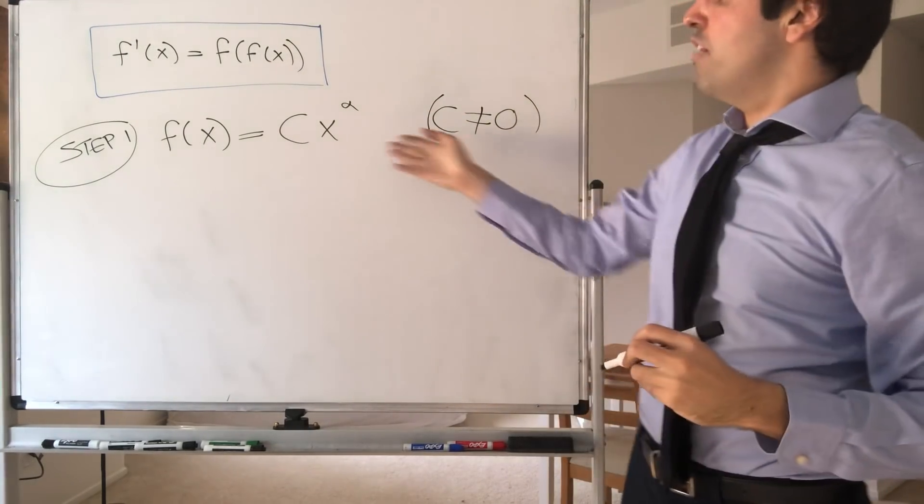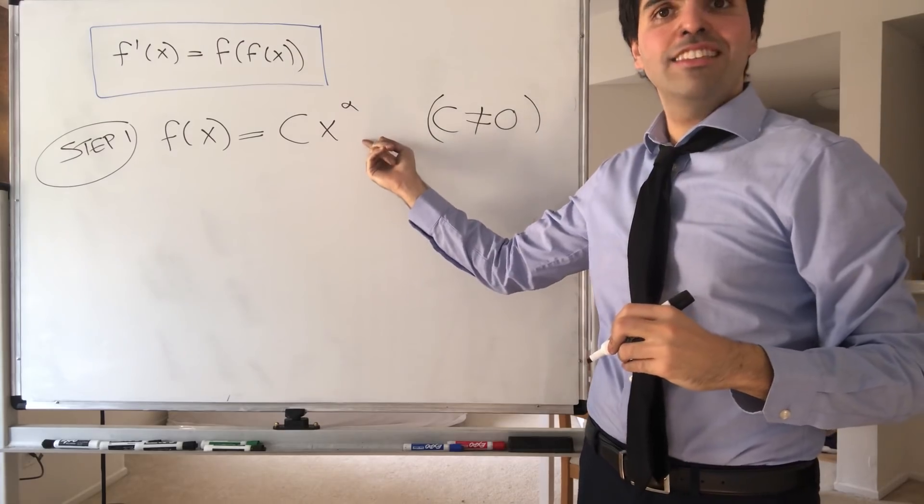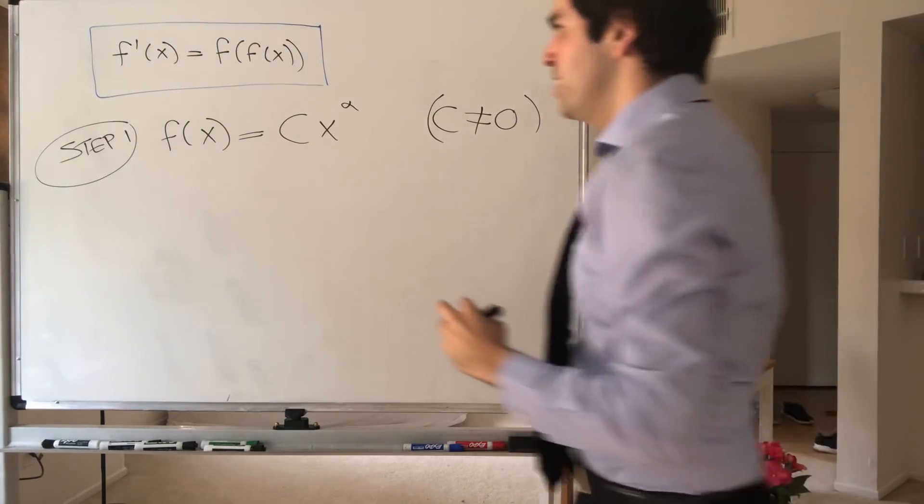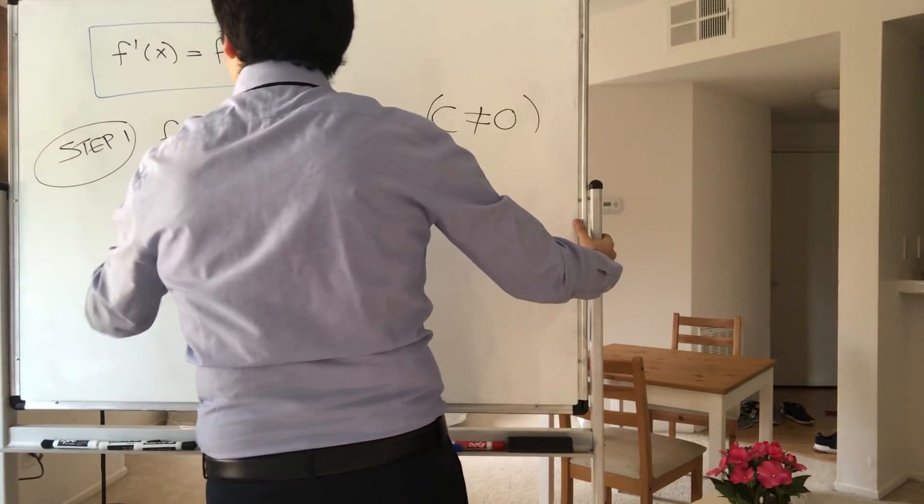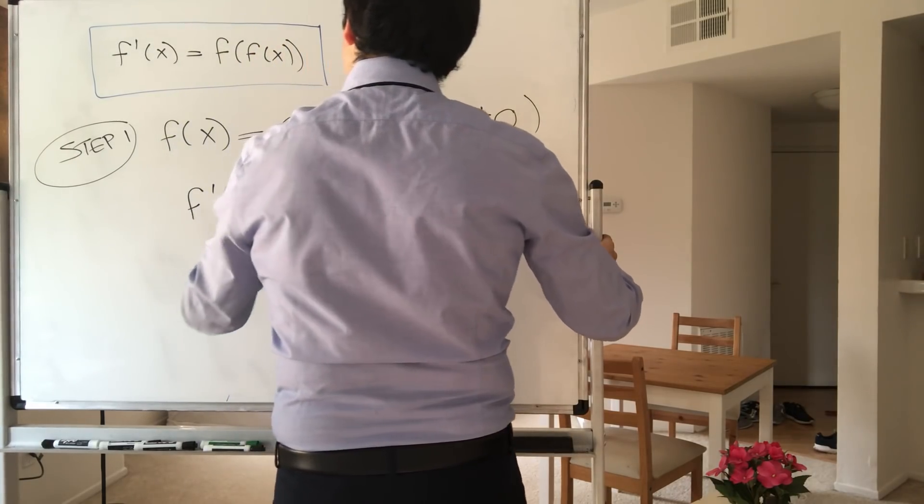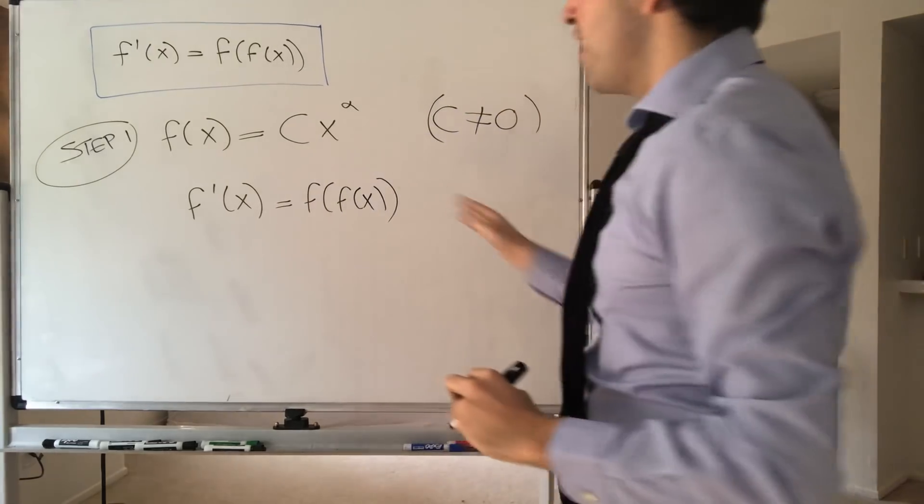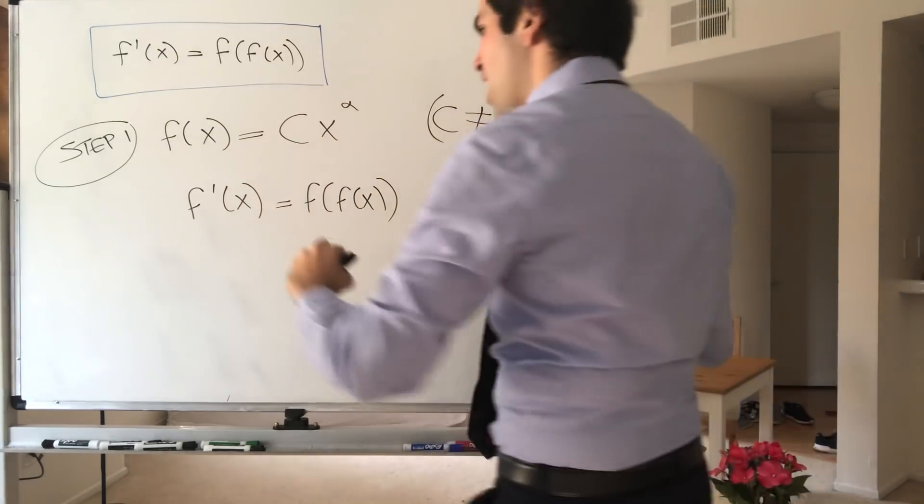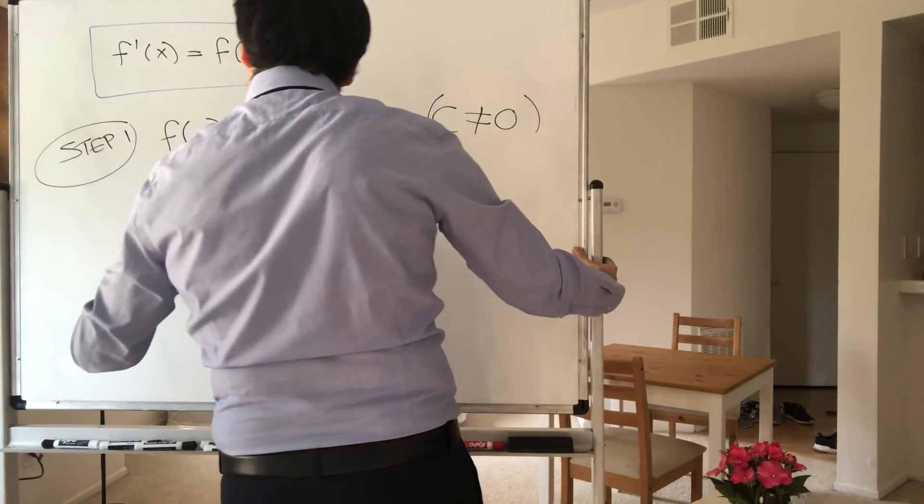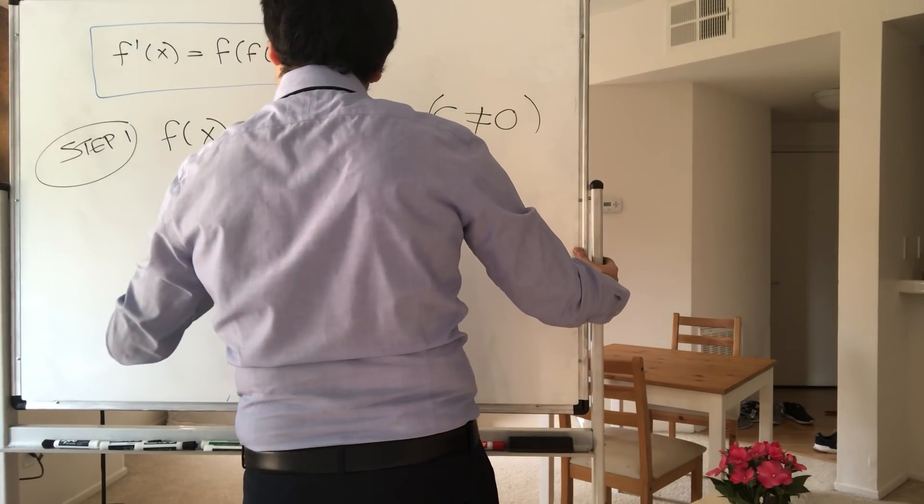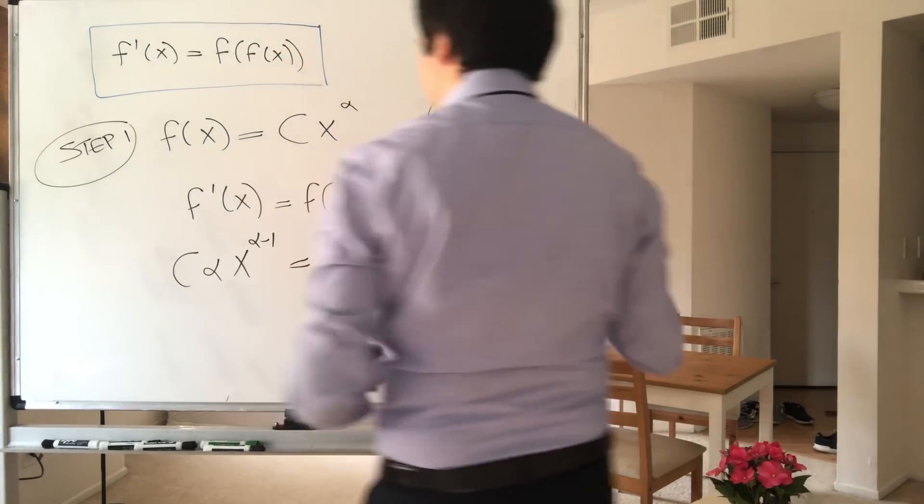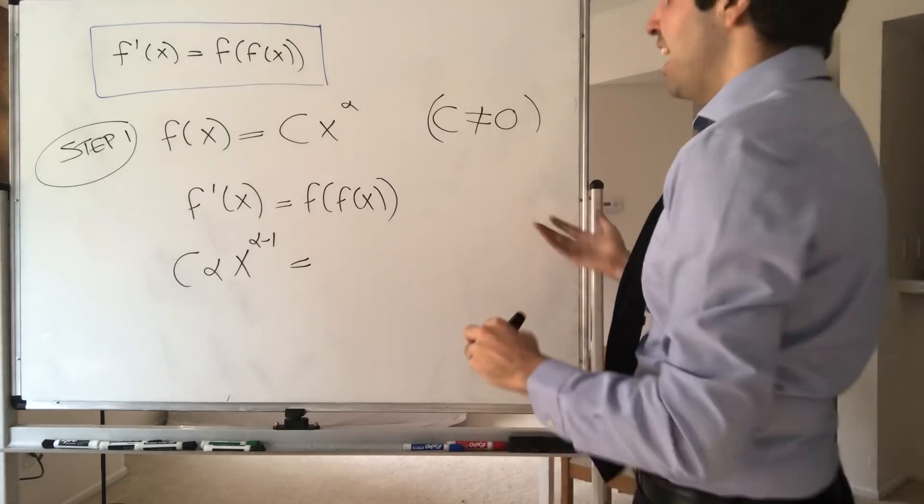And then what we have to do, we have to plug this ansatz into our equation. So, we have f' equals f of f. However, f' is just c alpha x to the alpha minus 1.